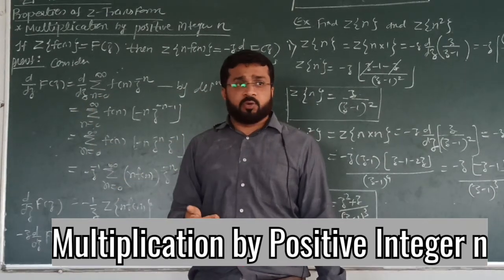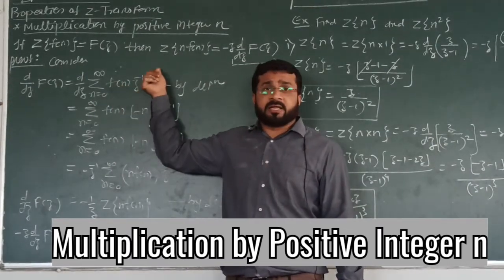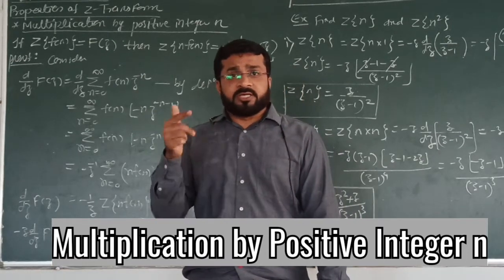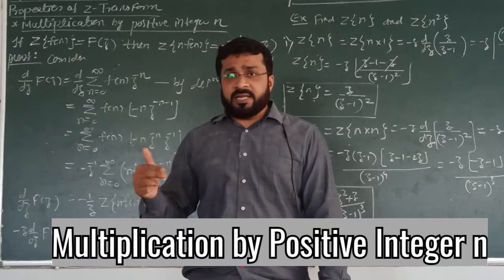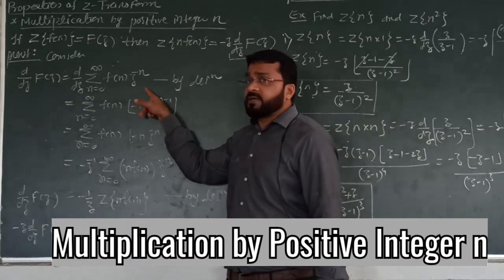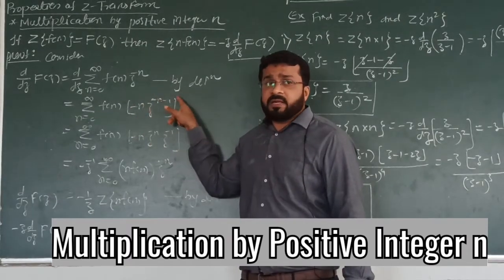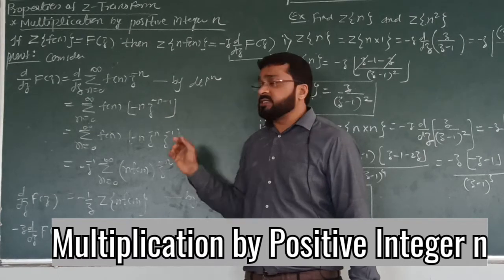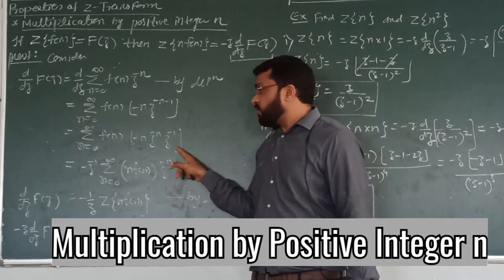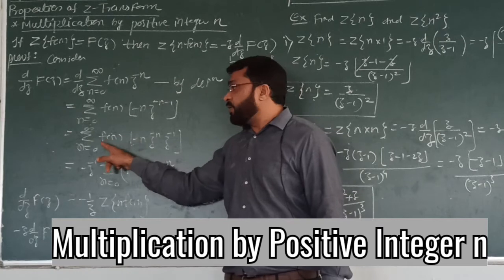Since F(N) is constant with respect to Z, we only need to differentiate Z to the power minus N with respect to Z. By the power rule, the derivative of Z to the power minus N with respect to Z is minus N times Z to the power minus N minus 1. Using the representation rule, we can break this as minus N times Z to the power minus N times Z to the power minus 1. Now this Z to the power minus 1 and this minus sign are both independent of N.